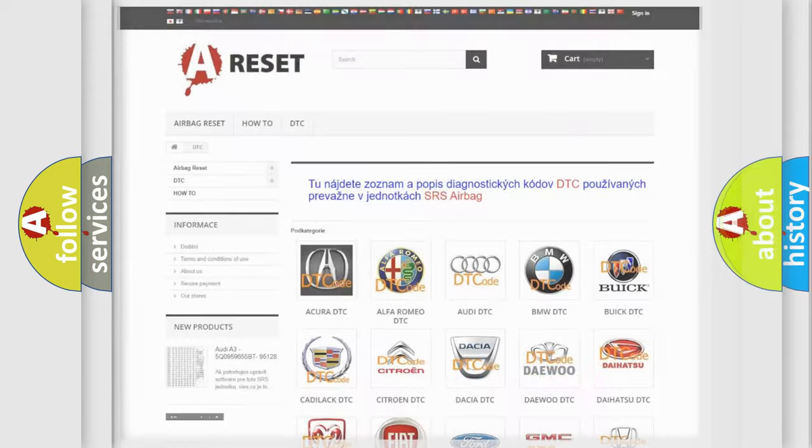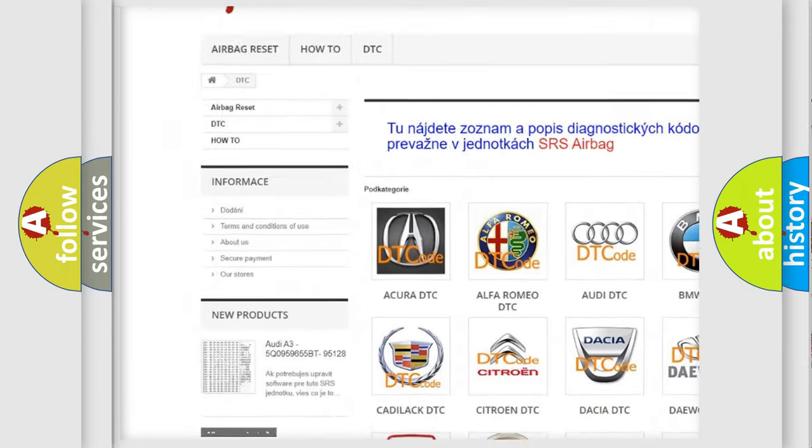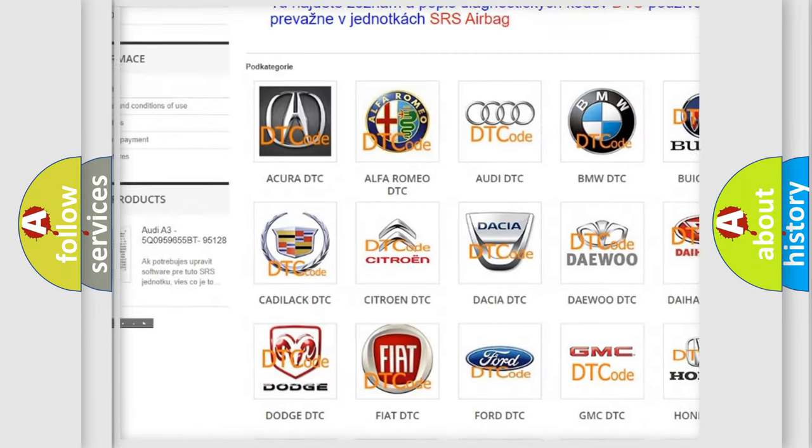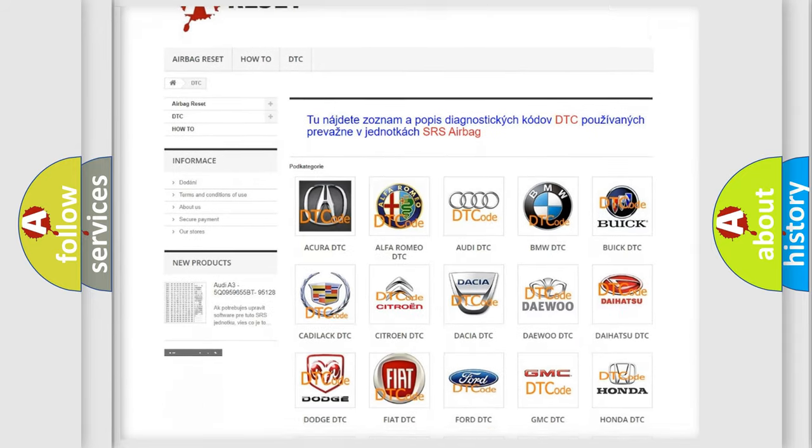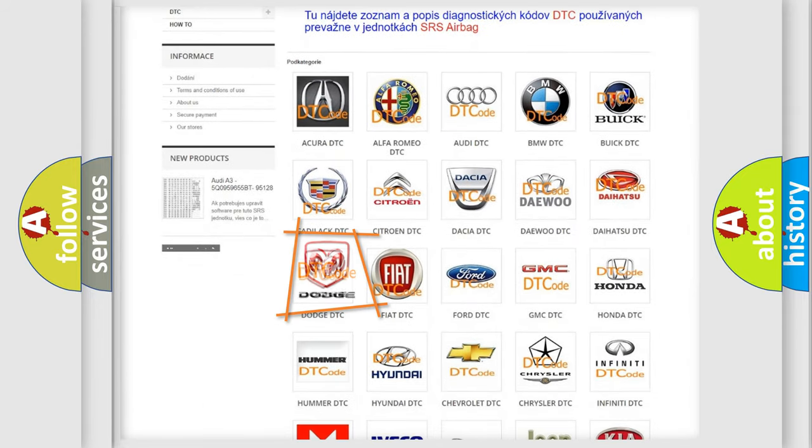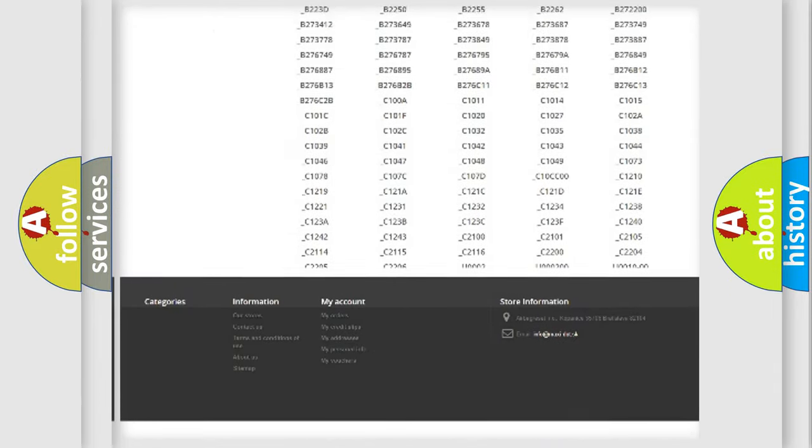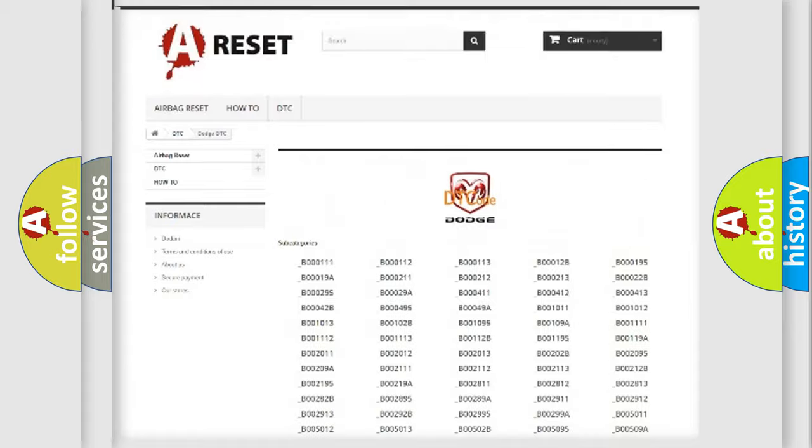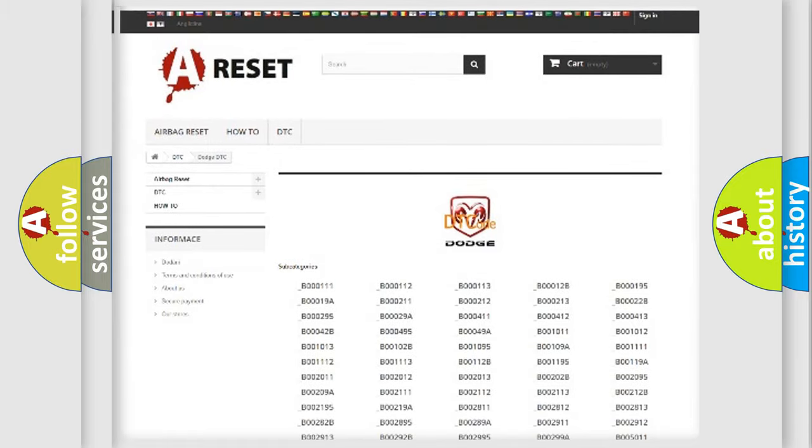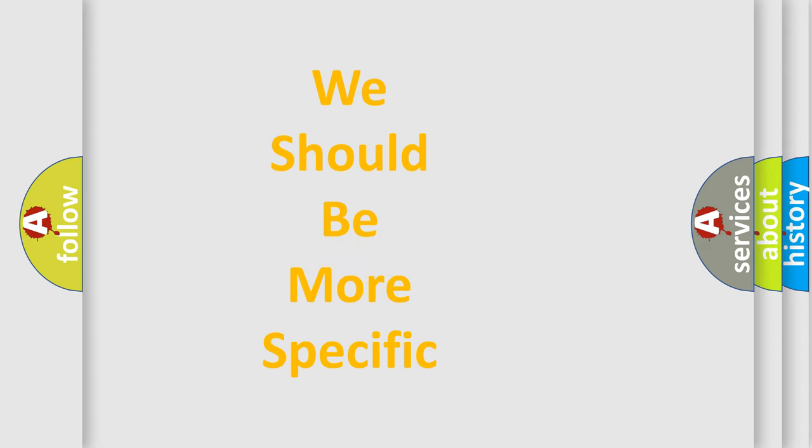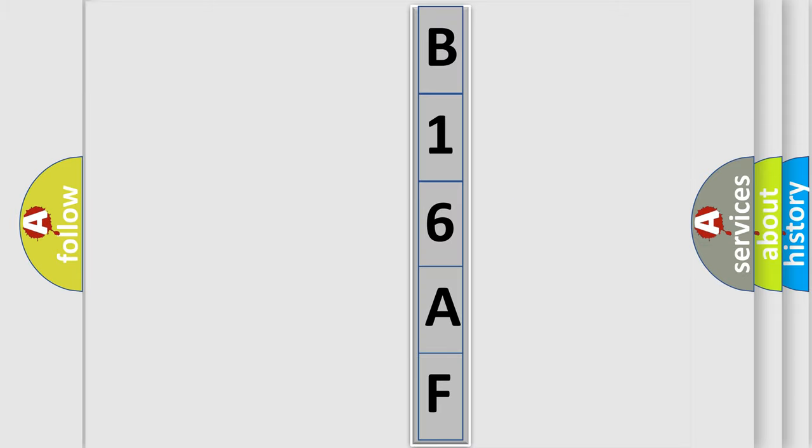Our website airbagreset.sk produces useful videos for you. You do not have to go through the OBD2 protocol anymore to know how to troubleshoot any car breakdown. You will find all the diagnostic codes that can be diagnosed in Dodge vehicles, and many other useful things. The following demonstration will help you look into the world of software for car control units. You can move the video a bit further.